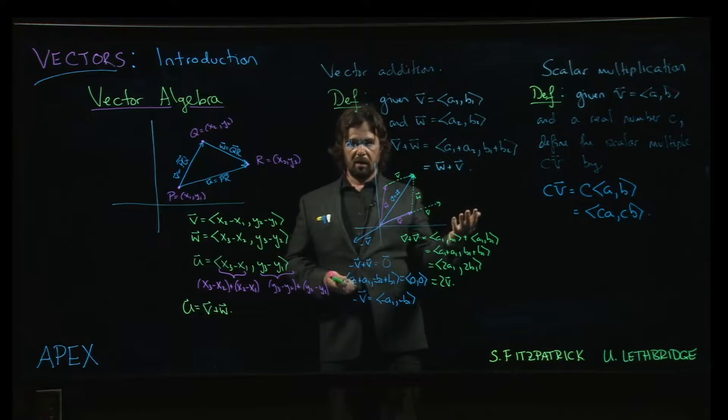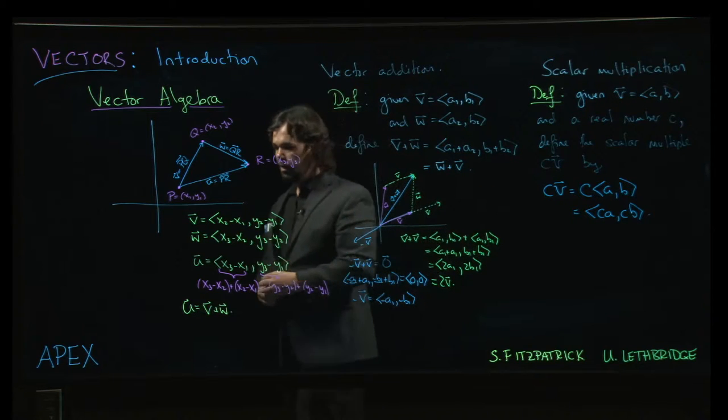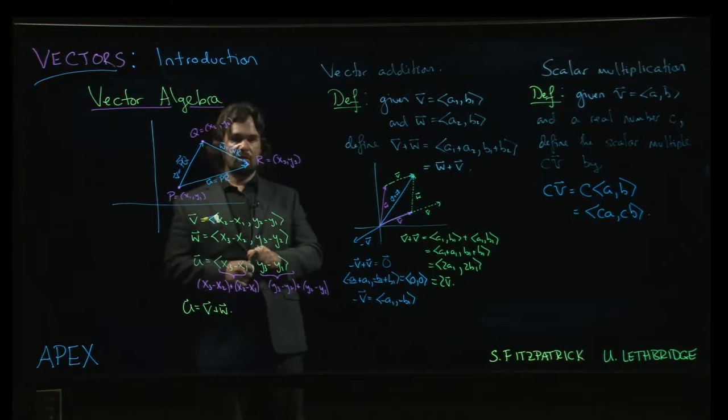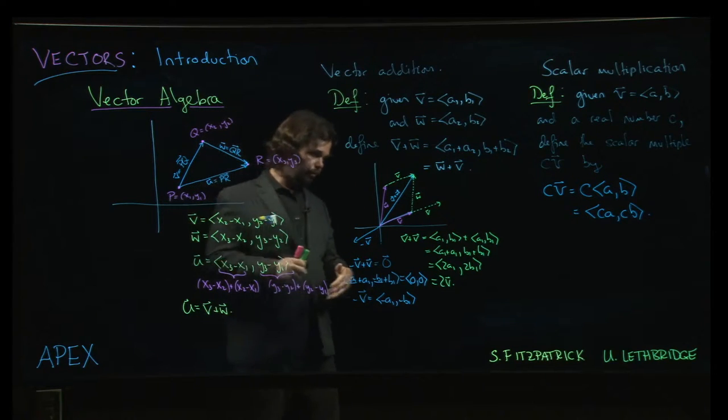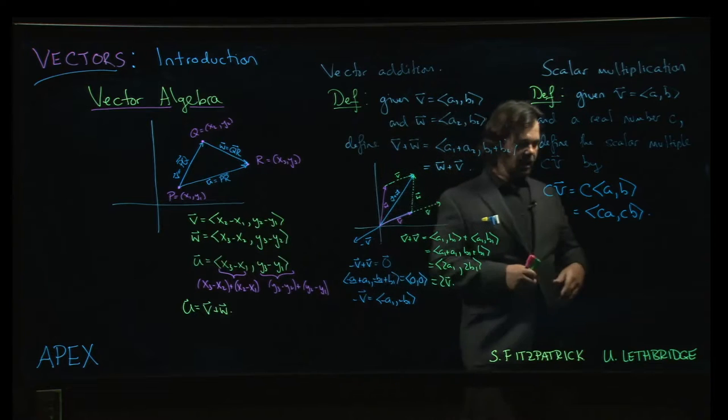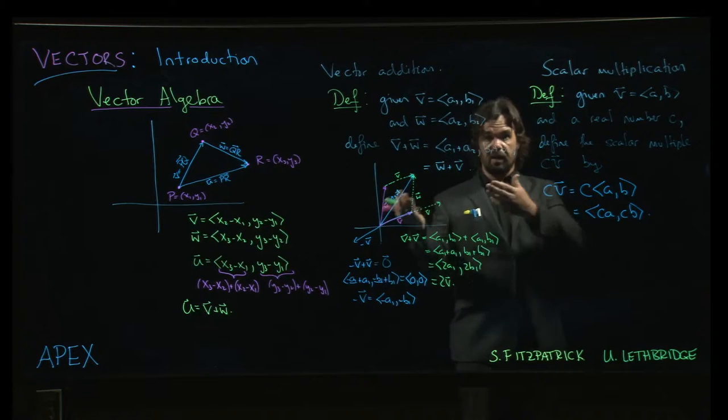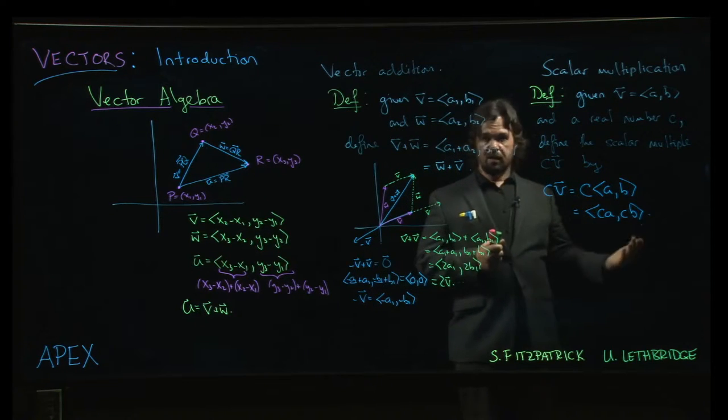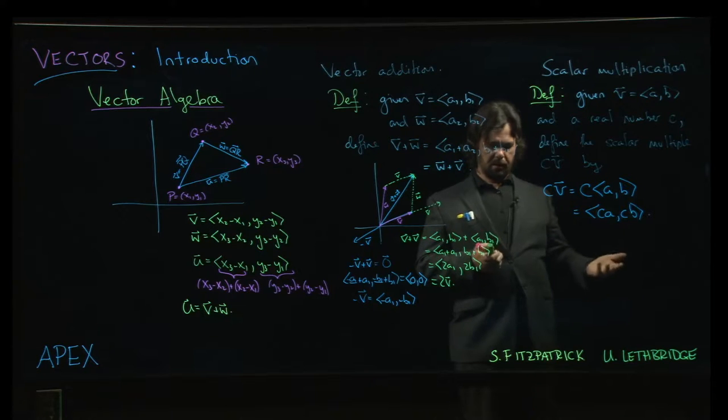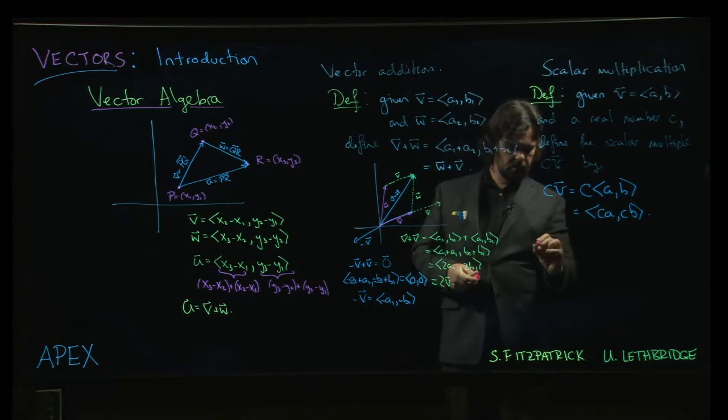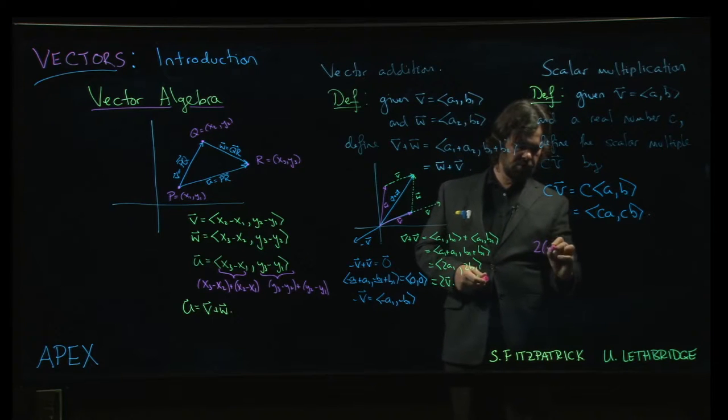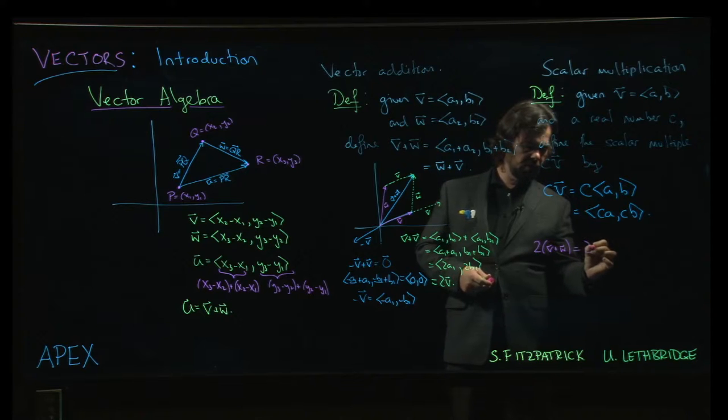The order doesn't matter. If you add three or more vectors together, you'll find that addition is associative—it doesn't matter how you group them. Scalar multiplication and addition interact through a distributive property. If I wanted to do 2 times (v plus w), I'm going to find that's the same thing as doing 2v plus 2w.